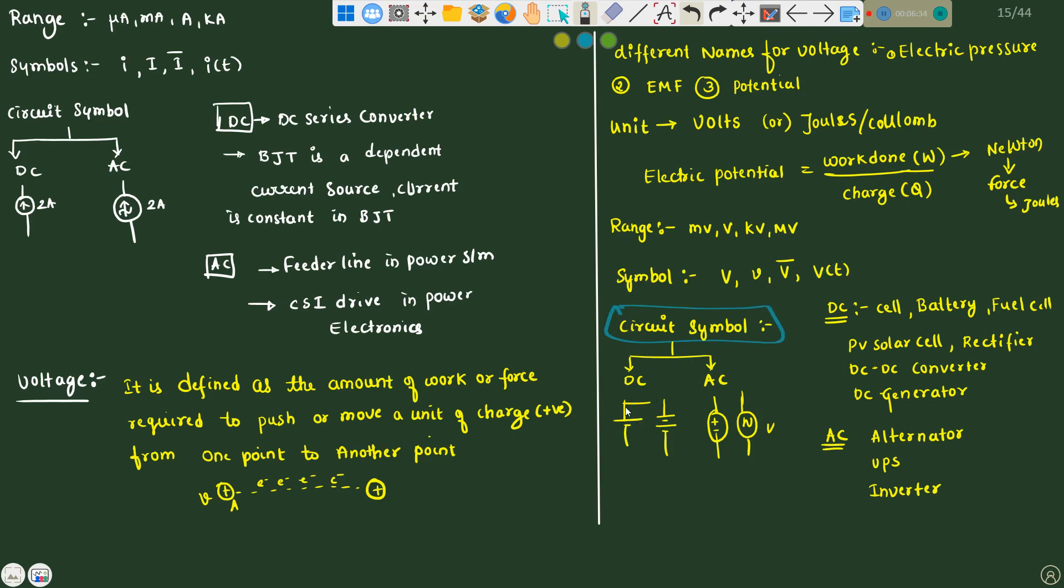If you talk about the circuit symbol, the cell or battery. In DC, in AC, this is like sinusoidal. Practical application of voltages in DC is cell, battery, fuel cell, they all are used as a DC voltage source, PV solar cell rectifier, DC to DC converter, DC generator. If you talk about AC: alternator, UPS uninterrupted power supply, inverter.